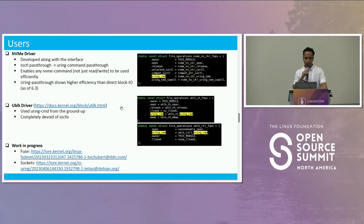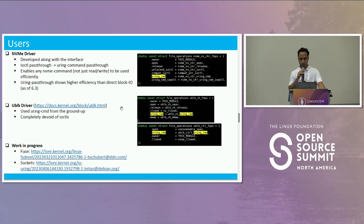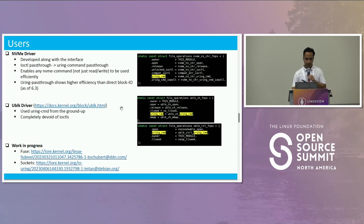The second user is the UBLK driver, which was also developed last year. It used Uring command from the ground up. If you look at the right-hand side picture, you do not see any unlocked_ioctl there — it never used ioctl. All the communication was done with the uring_cmd. At this point, FUSE is looking at using this, and on the networking side, sockets are also looking at using it — discussions are happening.